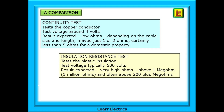The insulation resistance test will verify that the plastic insulation is intact - no holes or cracks. The test voltage is typically 500 volts and this test voltage goes into the copper conductor, not the plastic insulation, since the insulation is non-conductive. The result expected is in the very high ohms range, above one mega ohm or one million ohms, and often above 200 mega ohms or more, especially for new cables.